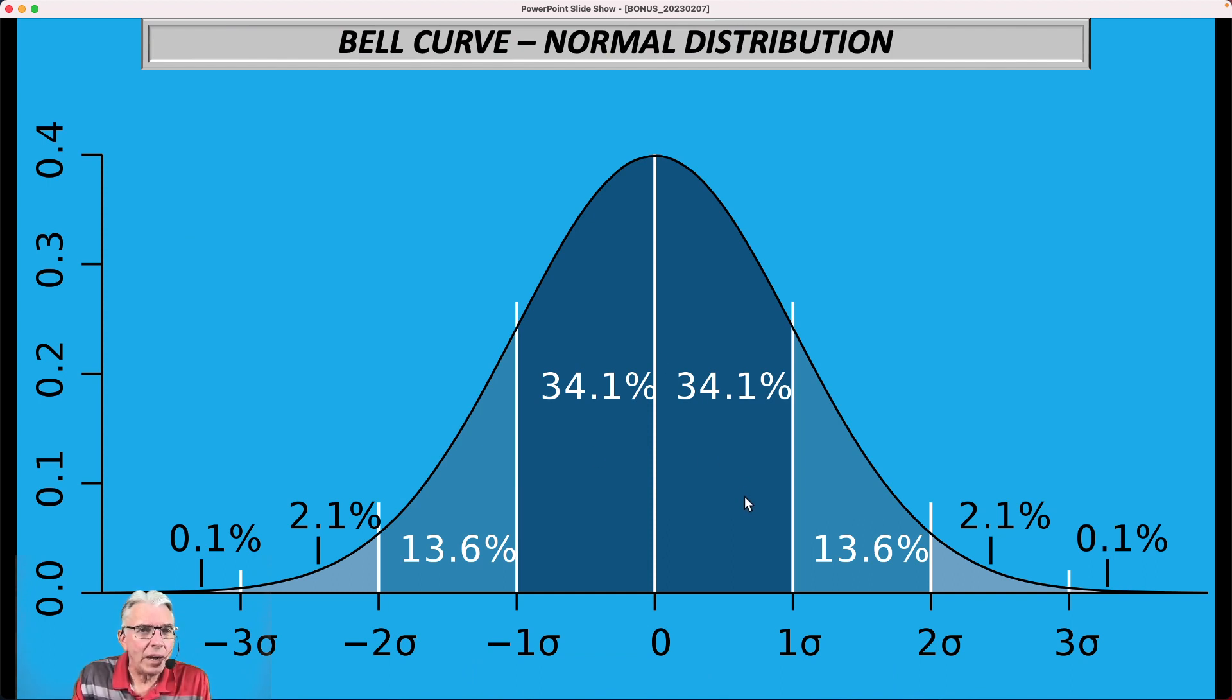Then if you go out two standard deviations, then 95 percent of the solutions are going to be from here to here. And if you go out three standard deviations, then 99.7 percent, all but 0.3 percent, are going to be between here and here. And anything outside of that is truly an outlier.